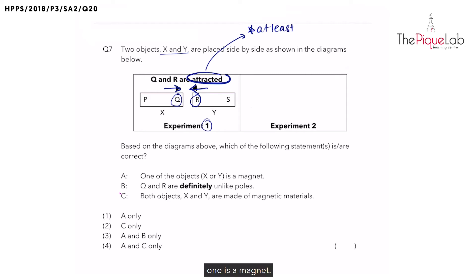And since both objects have attracted each other, the other object could be a magnet. It could also be a magnetic material. We cannot confirm until we try out the second experiment.